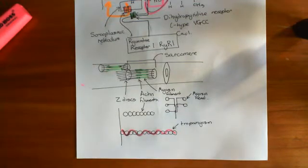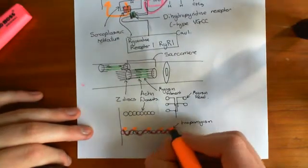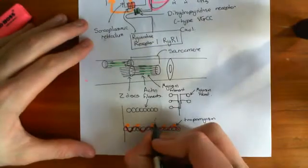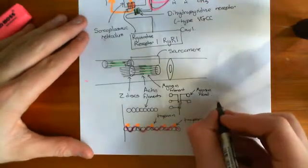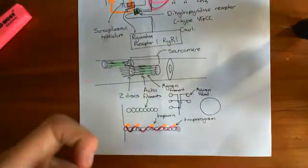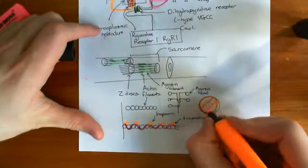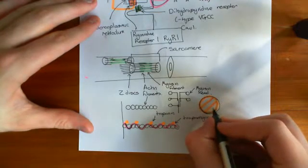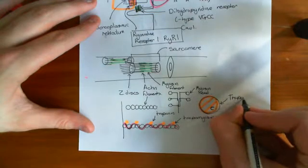There is a molecule that regulates tropomyosin doing this, which is called troponin. There are lots of these troponin molecules bound to the tropomyosin. Troponin is made up of three parts. One of them is called troponin C — let's say this is troponin C down here.